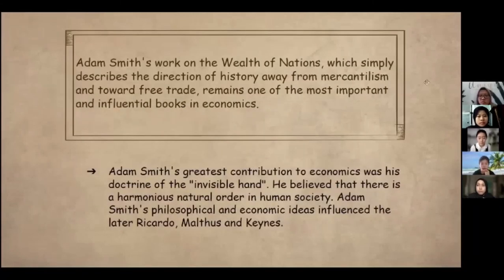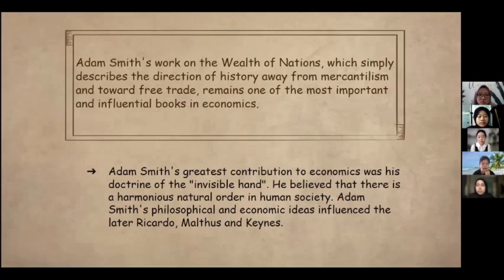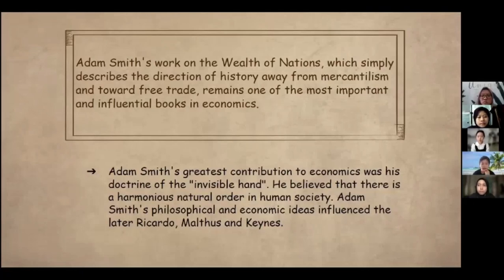Adam Smith's work in The Wealth of Nations describes the history of trade away from mercantilism and toward free trade. A free trade movement had been developing for decades and had a great impact on government policy. Smith's work was so extensive and organized that it remains one of the most important and influential books in economics today. Adam Smith's greatest contribution to economics was his doctrine of the Invisible Hand. He believed that there is a harmony of natural order in human society, and his philosophical and economic ideas influenced later thinkers.